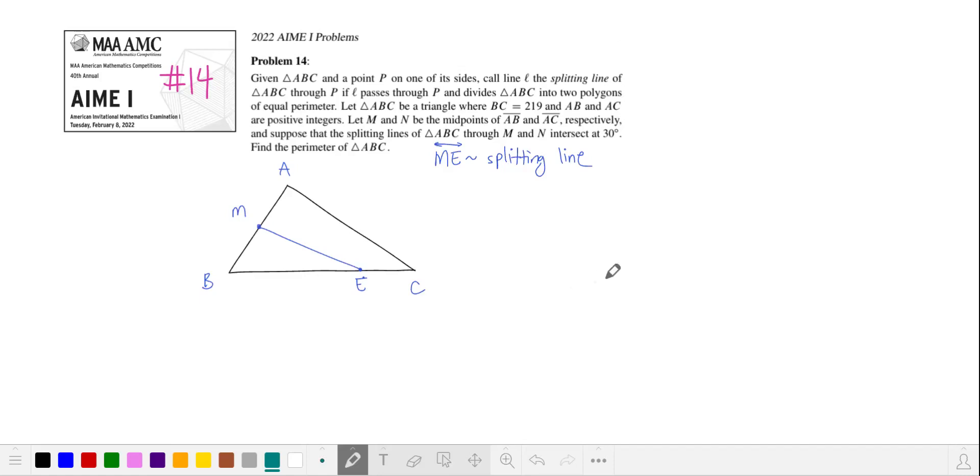Let's let ME be a splitting line. Then the perimeter of triangle BME will be the same as the perimeter of the quadrilateral on the opposite side of line ME.